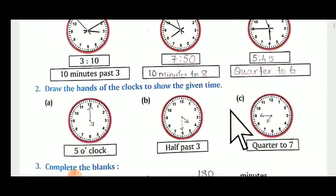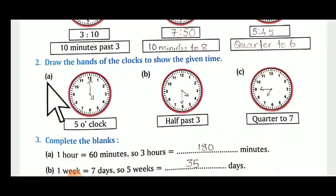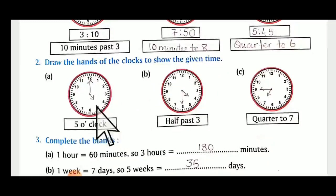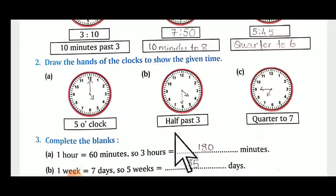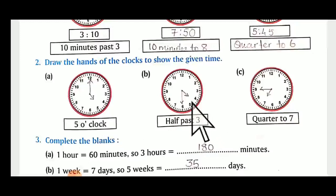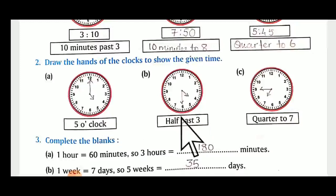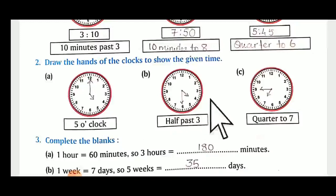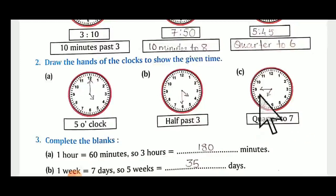Next: draw the hands of the clocks to show the given time. Five o'clock means smaller needle to the five and the longer one to the twelve. Half past three means it should be between three and four — three thirty — it will be half past three, meaning three thirty. Quarter to seven means fifteen minutes are remaining to be seven o'clock.